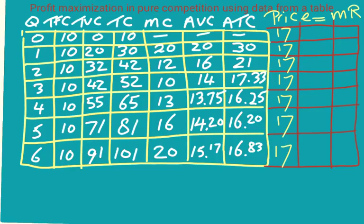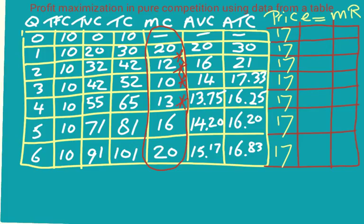The golden rule of profit maximization is to find where marginal cost (MC) equals marginal revenue (MR). One footnote: we should never look at quantities where marginal cost is falling, so we ignore quantities 1 and 2. Starting at quantity 3, the marginal cost is 10 and the marginal revenue is 17 — not very close. At quantity 4, marginal cost is 13 and price is 17 — closer.